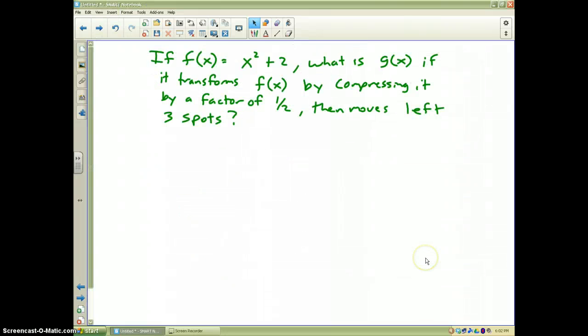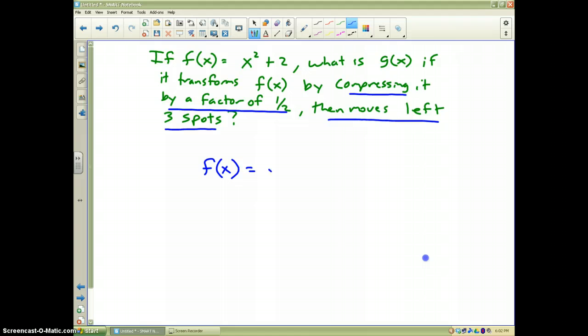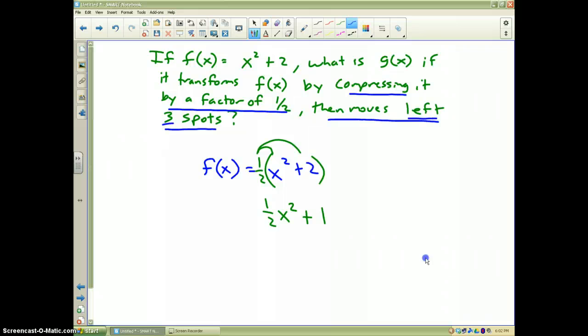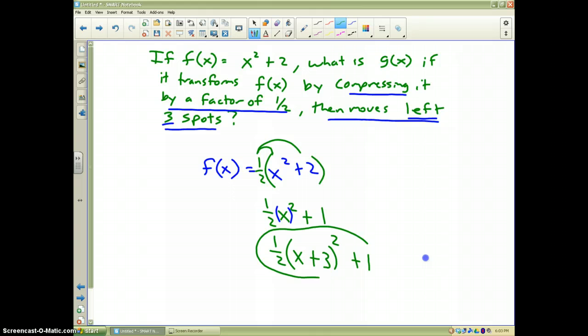Otherwise, the last topic, real quickly, that question right here. If f of x equals x squared plus 2, what is g of x if it transforms f of x by first compressing it by a factor of a half, and then it moves it left three spots? Well, all I do is I take f of x equals x squared plus 2, and the first thing I do is put it in parentheses because it says compress it by a half. Therefore, I'm going to distribute, and I get half x squared plus 1. Step 2, move it left three spots, and remember left is inside the parentheses. So basically, I'm going to write a half and then parentheses with the x, and since it goes left three, that would be plus three, and then the square on the outside plus the 1, which is our k value. And there you go. That would be g of x. And that wraps up vertex form. If you have further questions, please.